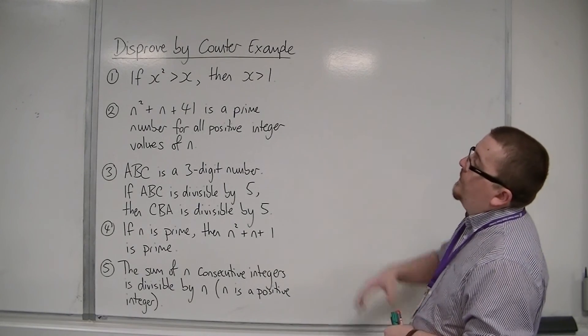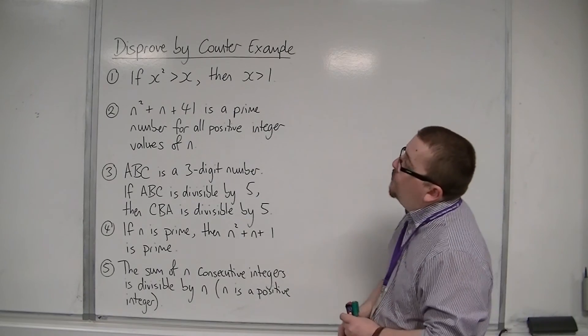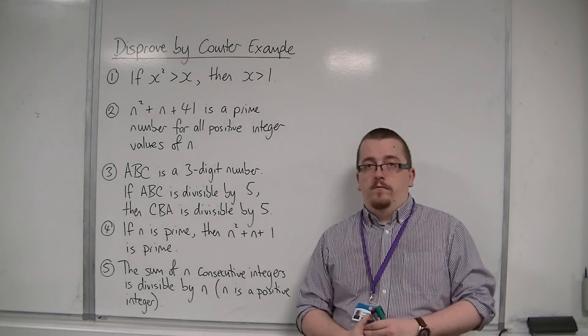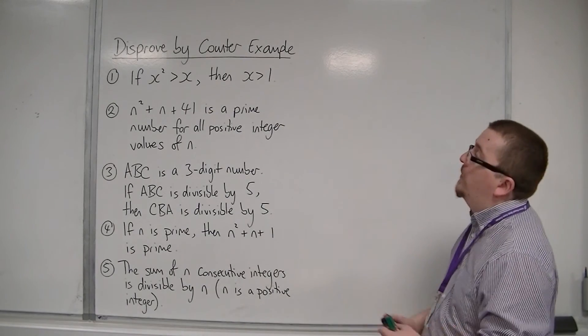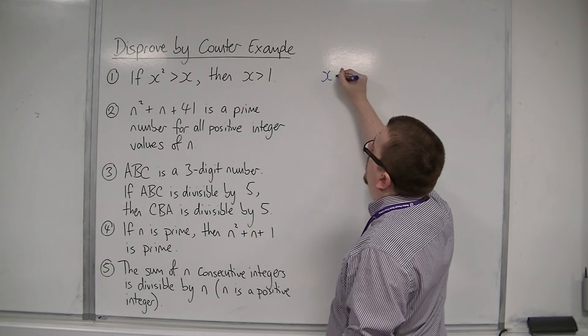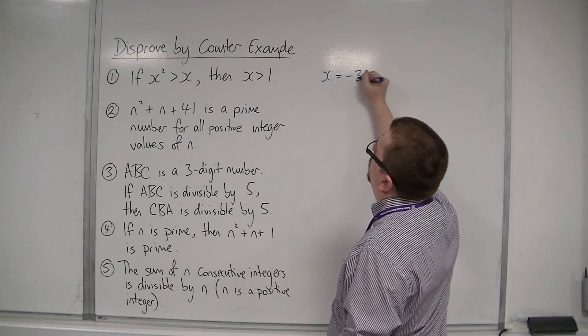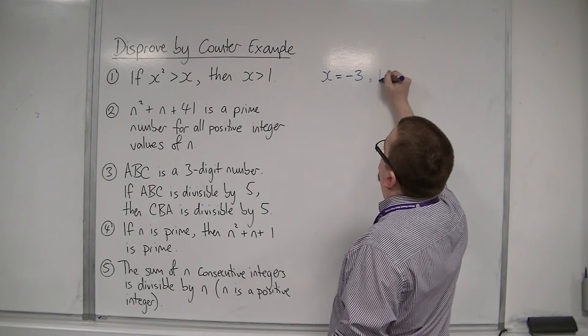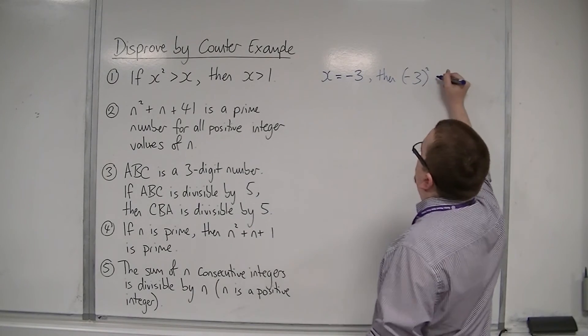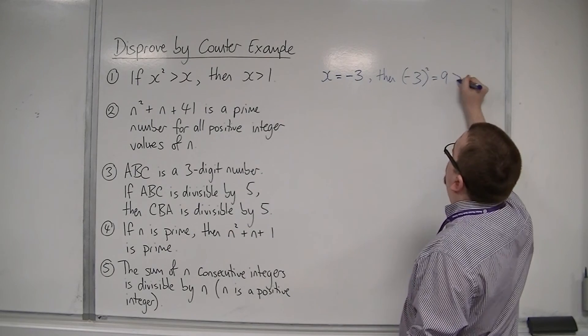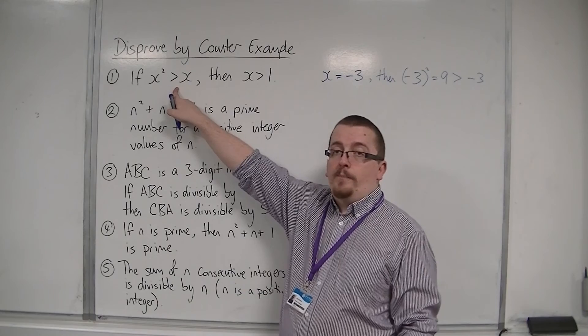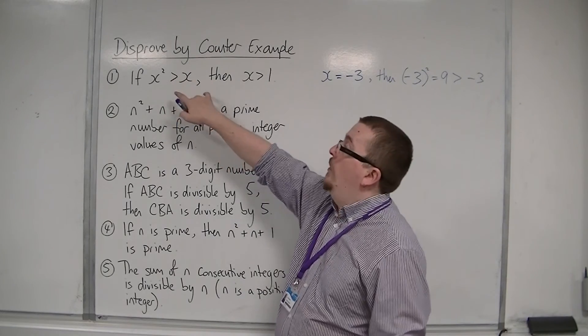So if we look at this first one, if x squared is greater than x, then x is greater than 1. So we just need to find one example where this doesn't work. Now, if x is equal to minus 3, then minus 3 squared is 9, which is definitely greater than minus 3.